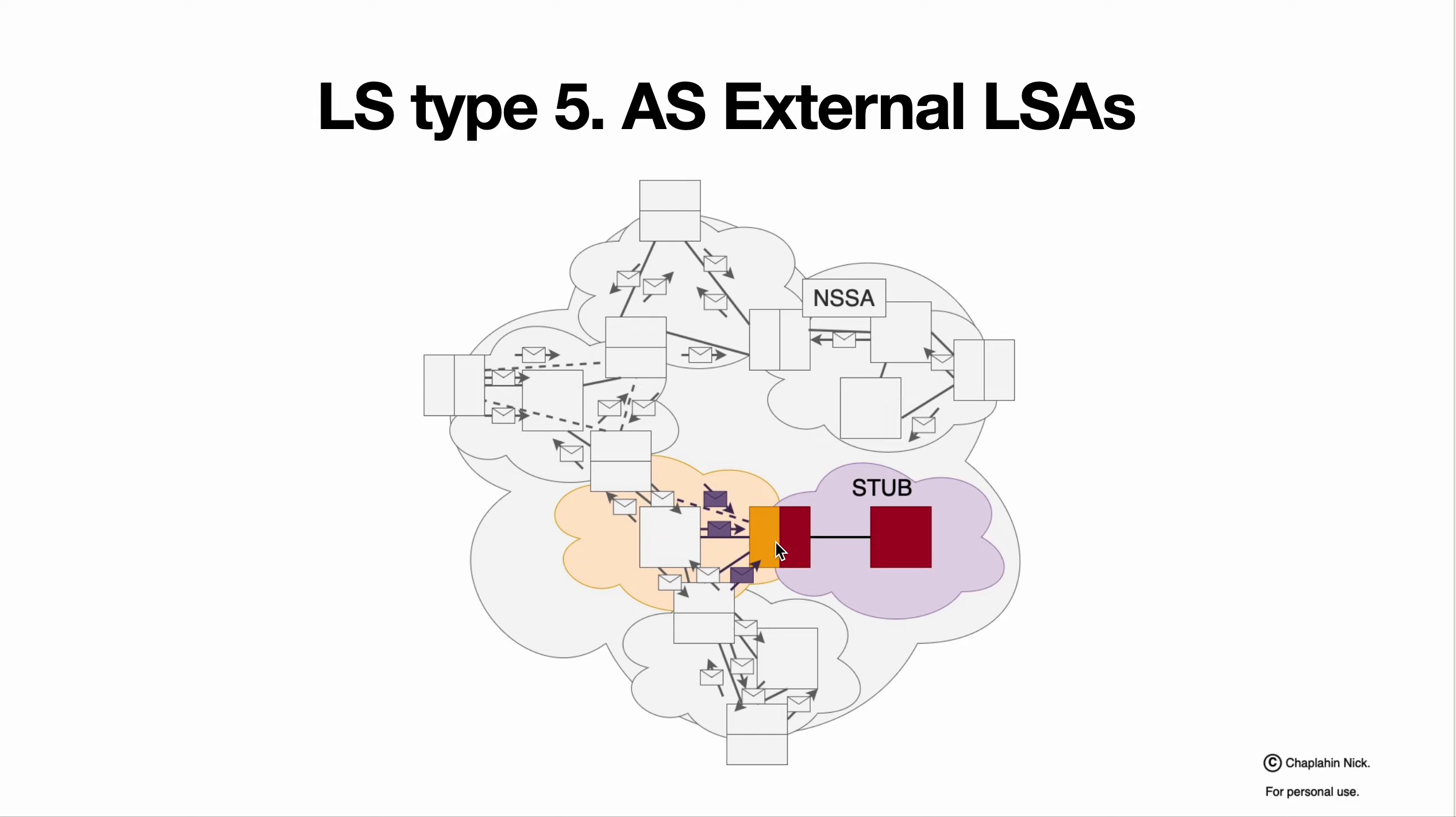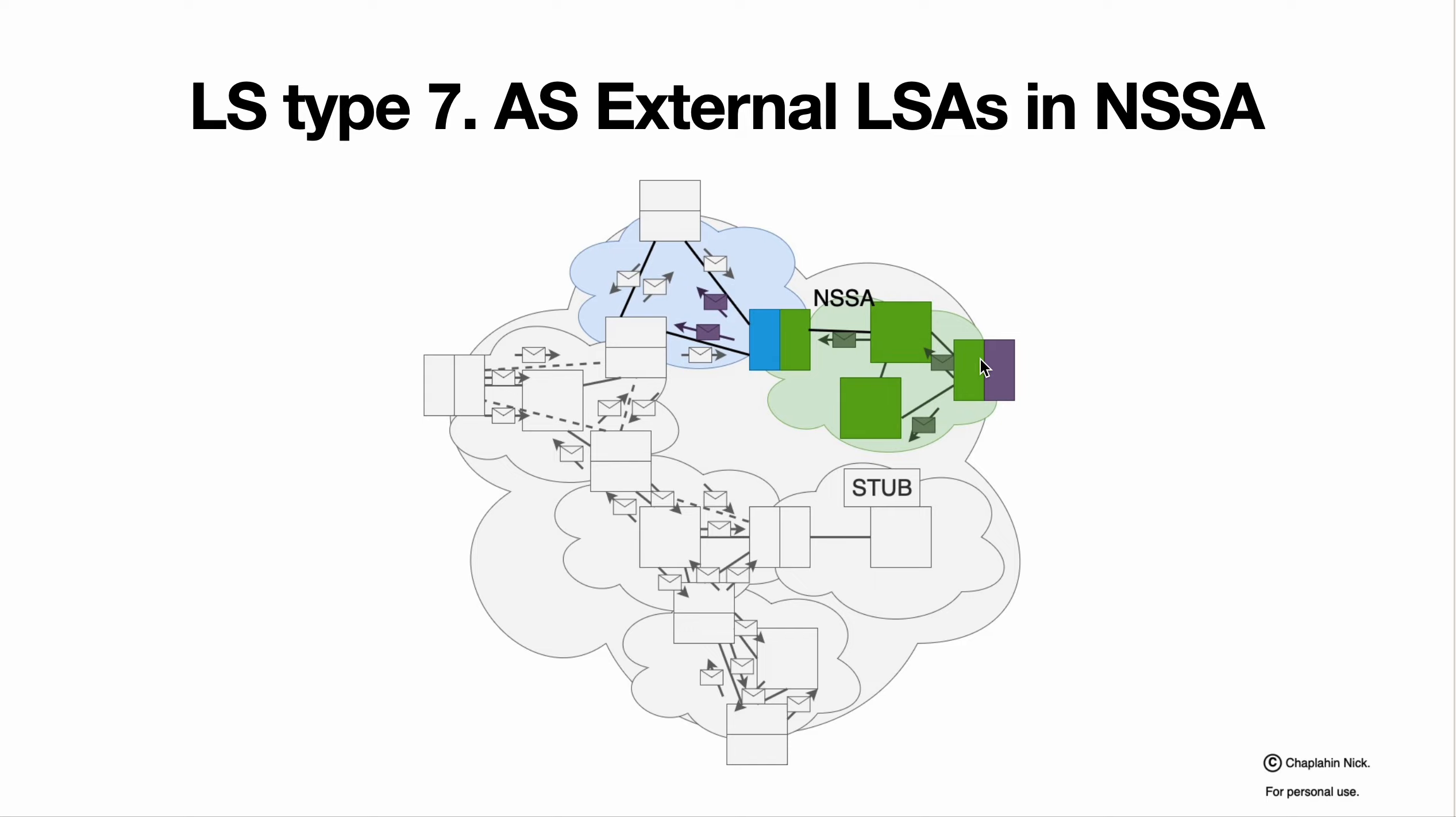Once they reach STUB area border router, they stopped. And they have a small specific working with not so STUB area. With not so STUB area, if autonomous system border device is part of the area, it will generate autonomous system external LSAs of type 7. And they will run in not so STUB area.